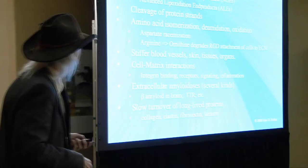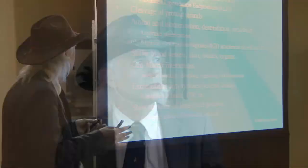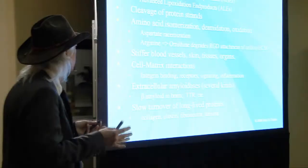There's also cleavage of the protein strands, which is particularly serious with elastin, which seems to be replenished less well than collagen. There's also isomerization of the amino acids in the proteins, deamidation, and oxidation. These happen much more slowly than the glycation and lipoxidation, so if we were looking for an escape velocity we'd work on glycation first and work on these later.